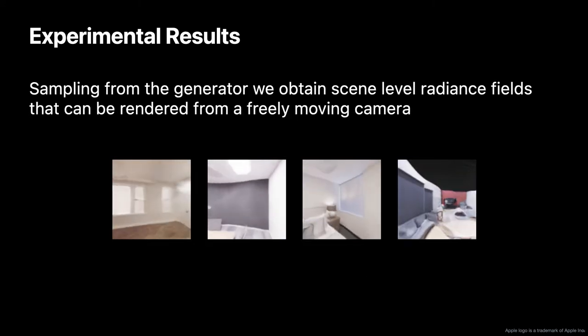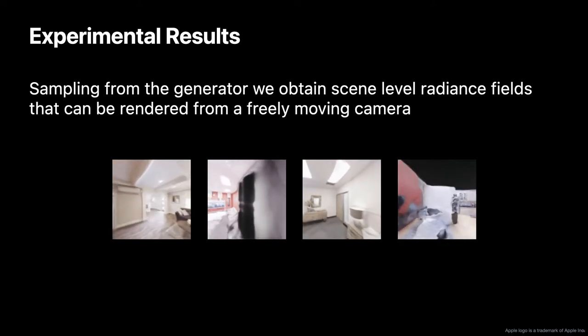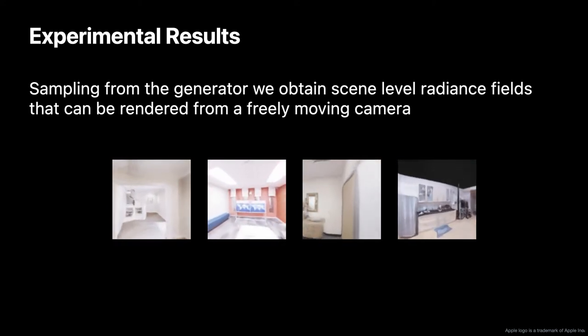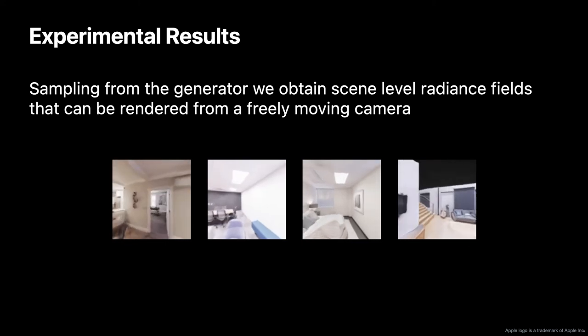In contrast to previous 3D GANs which restrict camera movement to a viewing sphere centered around the generated object, GSN trains on a wide range of camera poses, allowing for unconstrained scene exploration during inference.